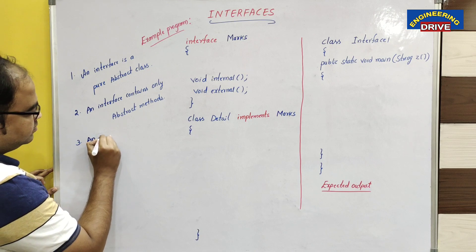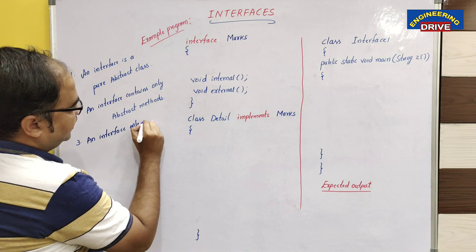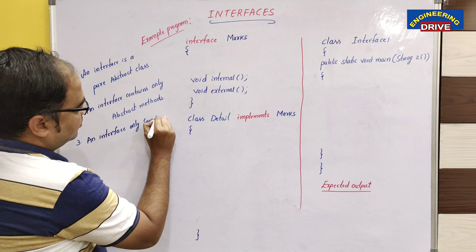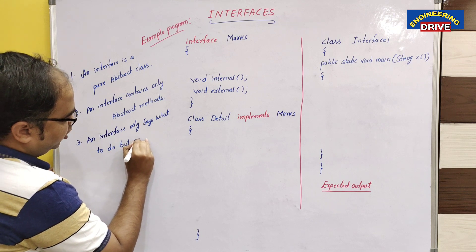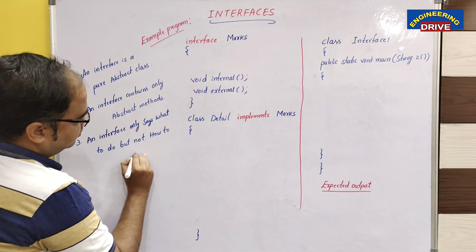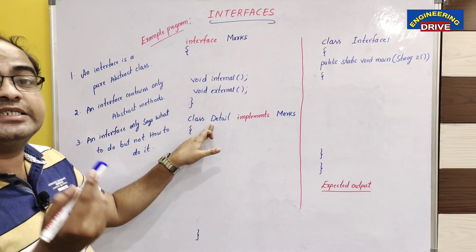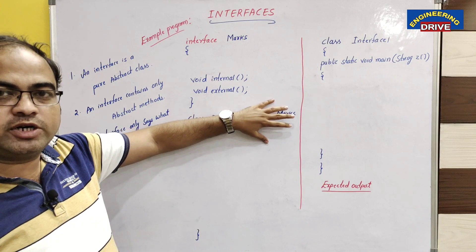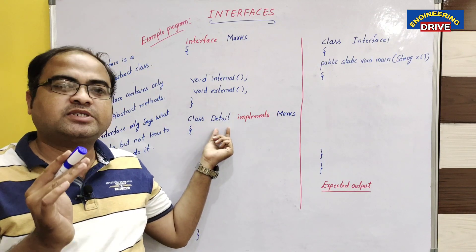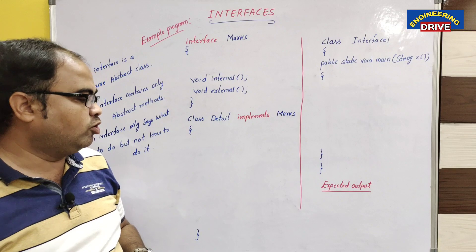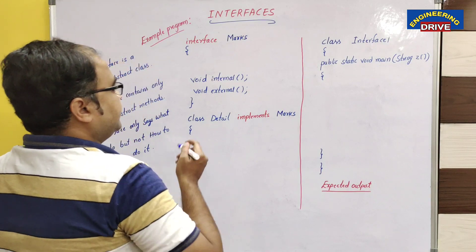An interface only says what to do, but not how to do it. The class that is implementing the interface is responsible for knowing how to do it. If we have only an interface in our Java program, there is no use. After the interface, there should be some class that is going to implement it. Let us take one example program to show the working of this interface concept: class 'detail' implements 'marks'.